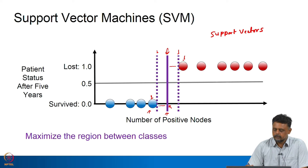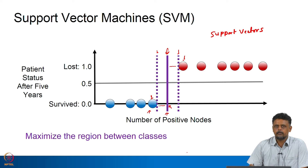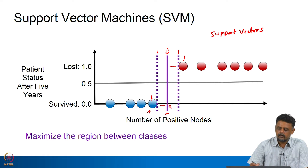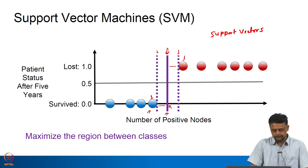They are called support vectors because we can think of them as vectors in n-dimensional space — a point in n-dimensional space if your dataset is n-dimensional. The objective of a support vector machine is to find the optimum boundary with respect to the support vectors, which are basically the closest points of either class to the separating boundary we are looking at.